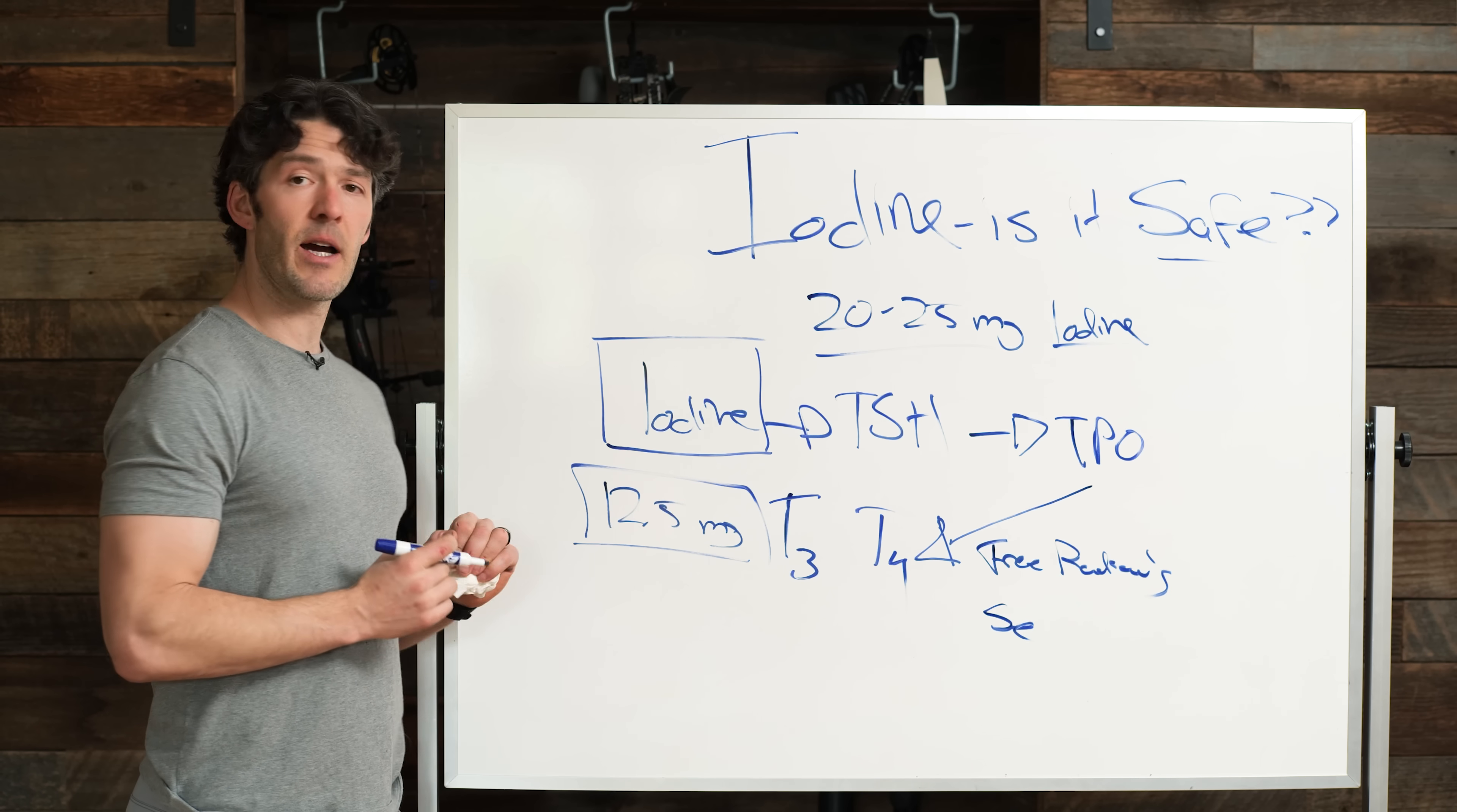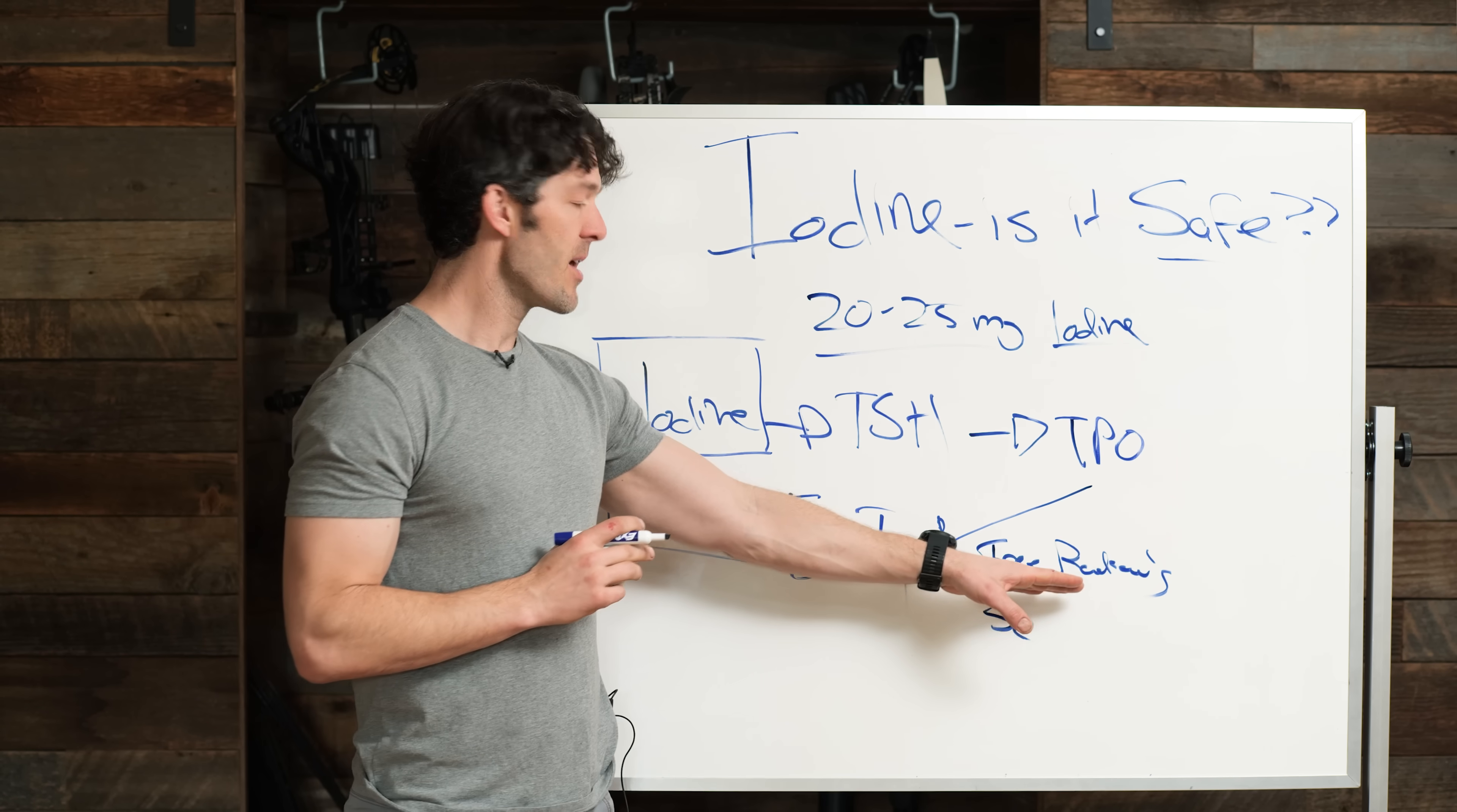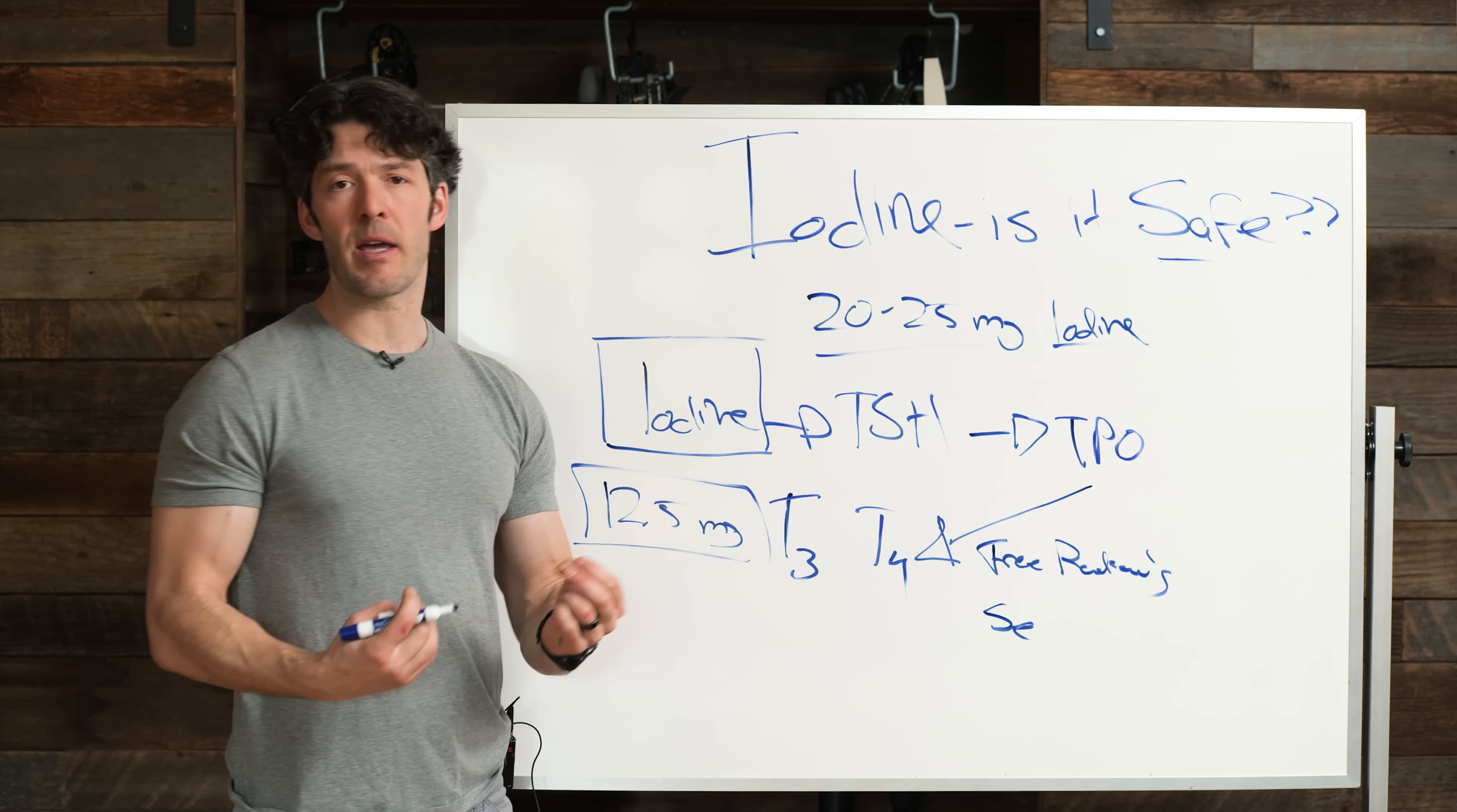So was the problem the iodine or was the problem an inability to neutralize the increase, the natural increase in free radical stress as a function of making more thyroid hormones? I don't think we should villainize the iodine. Again, we should really be more concerned about the free radical stress and ways to circumvent that or overcome that by recommending if you're going to take really high doses of iodine, 12.5 milligrams or more, that you also increase your selenium intake.